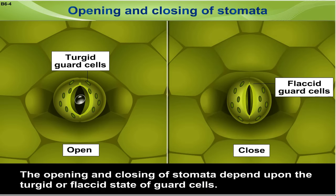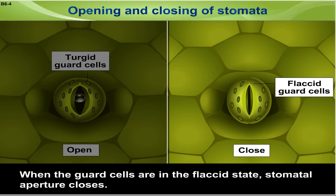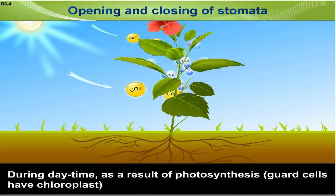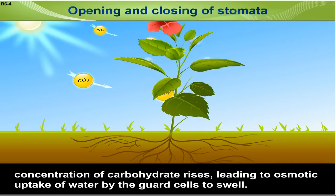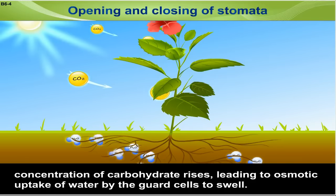The opening and closing of stomata depend upon the turgid or flaccid state of guard cells. When the guard cells are in the flaccid state, the stomatal aperture closes. During daytime, as a result of photosynthesis — since the guard cells have chloroplasts — the concentration of carbohydrates rises, leading to osmotic uptake of water by the guard cells, causing them to swell.